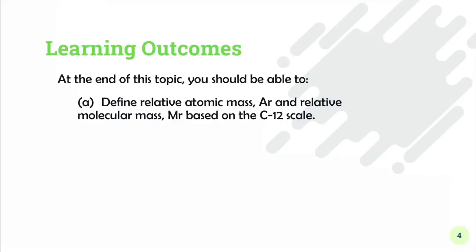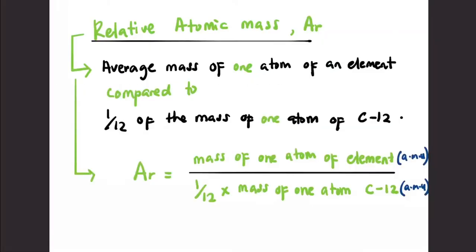At the end of this lesson, you should be able to define relative atomic mass and relative molecular mass based on the carbon-12 scale. Relative atomic mass, or Ar, of an atom is the average mass of one atom of an element when compared to 1/12 of the mass of one atom of carbon-12. The formula is: Ar equals mass of one atom of element divided by 1/12 times mass of one atom of carbon-12.